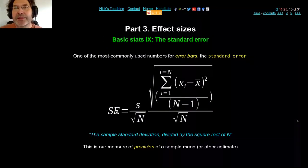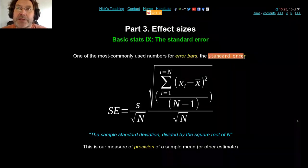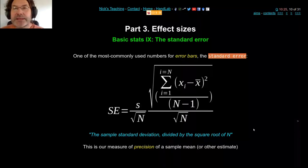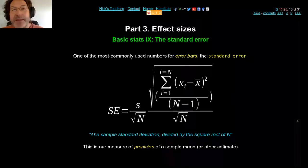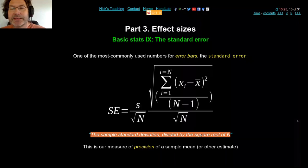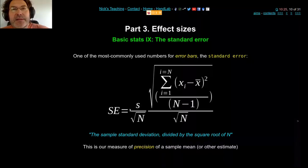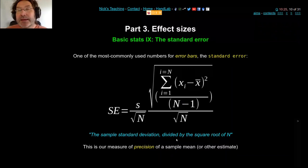The standard error is very commonly used in error bars on graphs, used to calculate the T statistic, and used in regression parameters — basically every parametric statistic uses standard error. The equation is simply the standard deviation divided by the square root of the number of samples. If you know nothing else about statistics, knowing that standard error equals standard deviation divided by the square root of N will get you a long way in extracting effect sizes from papers.